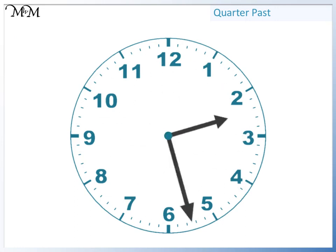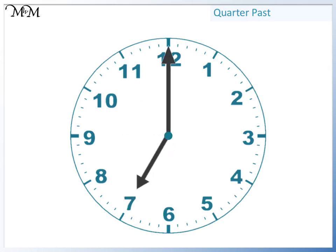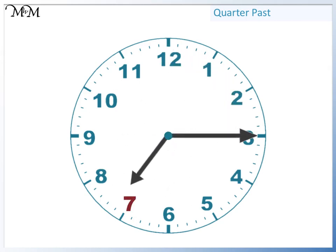This time, we'll start at seven o'clock. From here, the minute hand moves a quarter of the way around the clock to three. So, we know the time will be quarter past. The hour hand is a quarter of the way past seven. So, the time is quarter past seven.